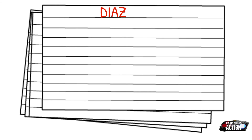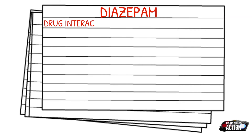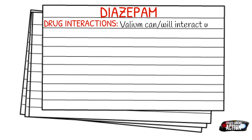Going into some of the drug interactions of Valium: Valium can and will interact with other narcotics, other benzos, sedatives, hypnotics, and even alcohol, and it does so by increasing or potentiating the CNS depression and hypotension.